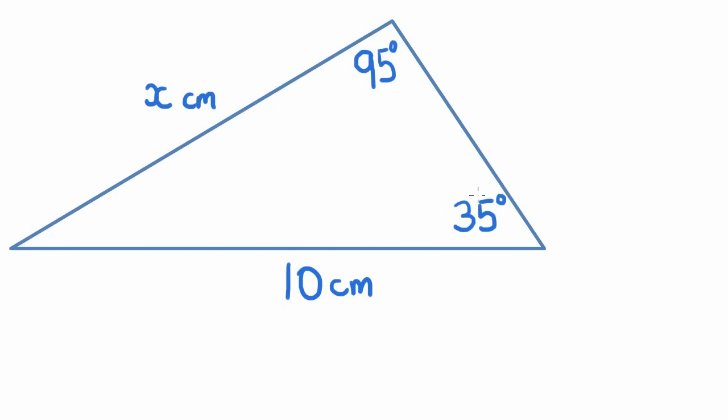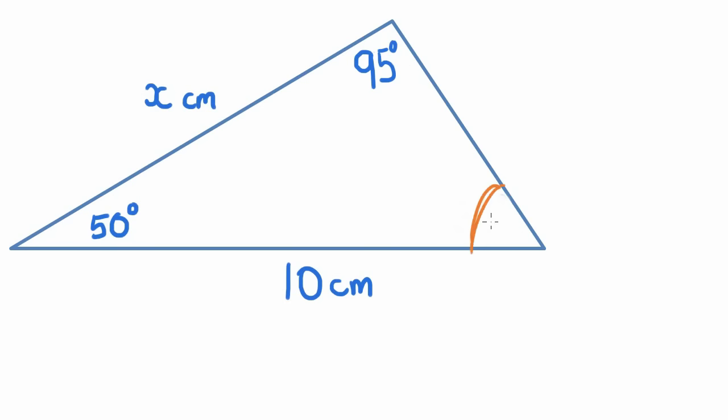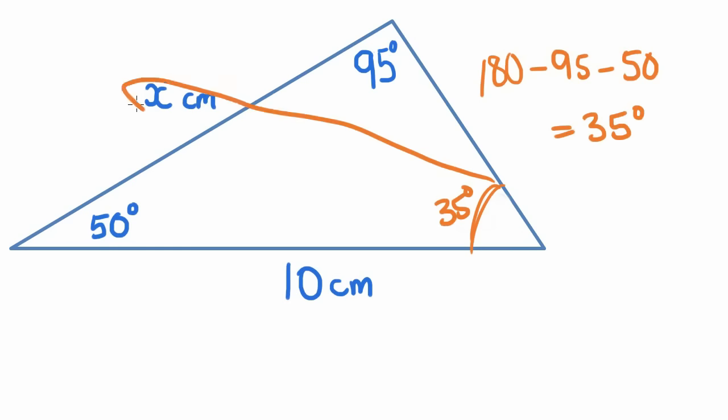Now what would happen if they hadn't given us this piece of information down here, this 35? Let's say that we were given this one instead, which is 50 degrees. Now, can we use the sine rule? We still have our matching set here, which is going to help us out. But now we don't know what's opposite the x, so that's a bit of a problem. But remember how all the angles in a triangle add up to 180 degrees? All we need to do is 180 minus 95 minus 50, and we get an answer of 35 degrees. And then we can use this matching pair to do the sine rule.